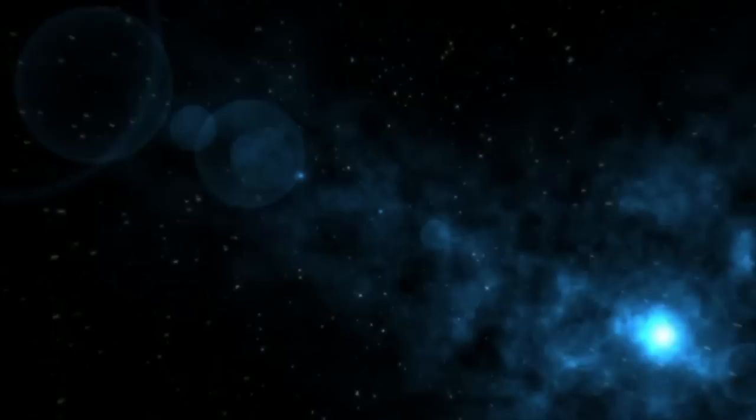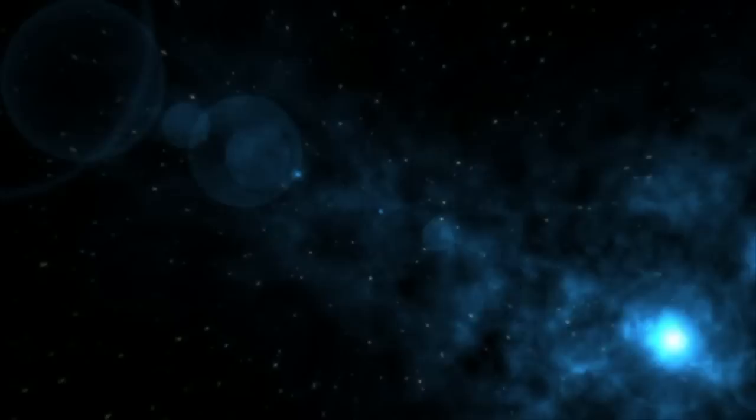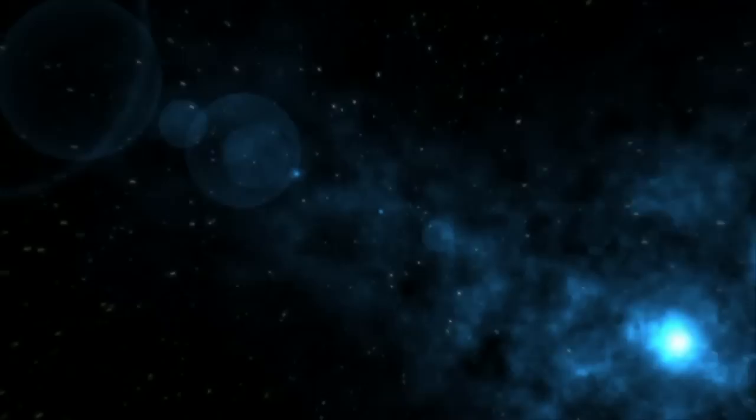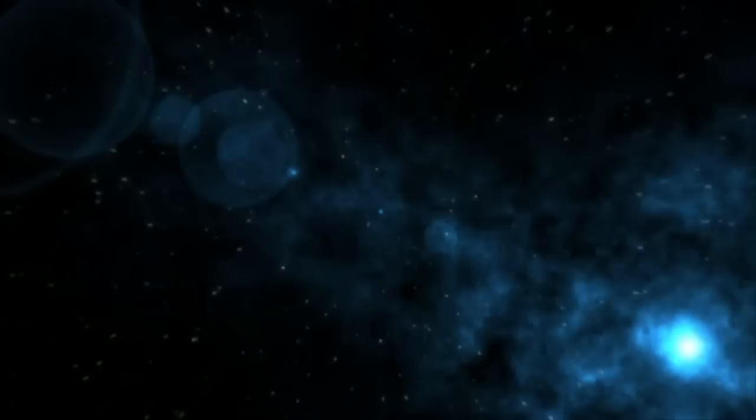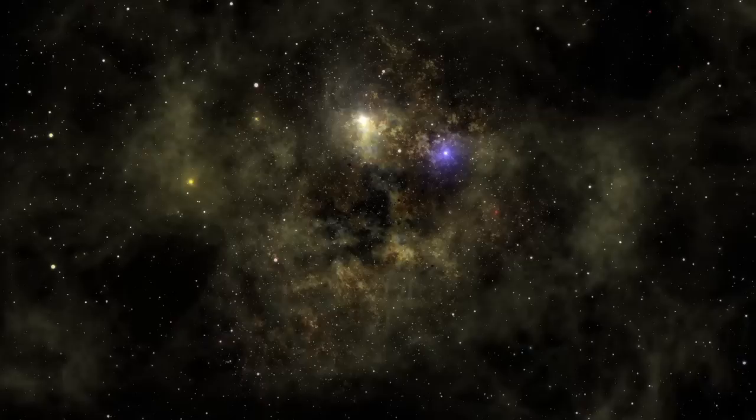In a dense white dwarf, electrons are forced into higher energy states, they start moving faster, and that creates electron degeneracy pressure, which in turn supports the white dwarf from undergoing further gravitational collapse. But when you hit the Chandrasekhar limit, the electrons are moving near the speed of light, and that pressure is overcome. And this is where things get uncertain depending on what the white dwarf's core is composed of.